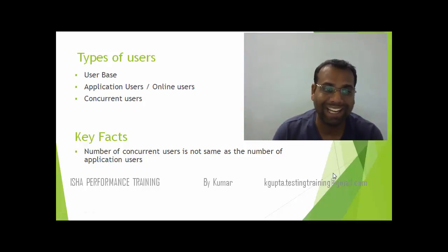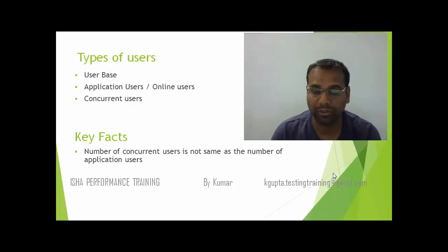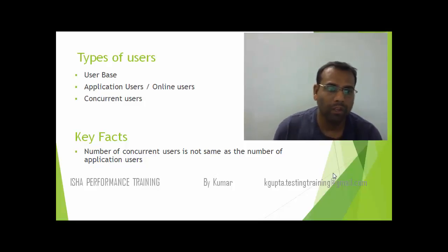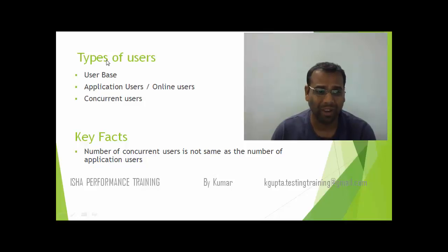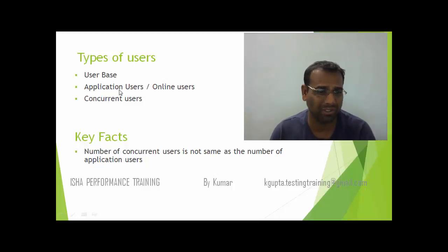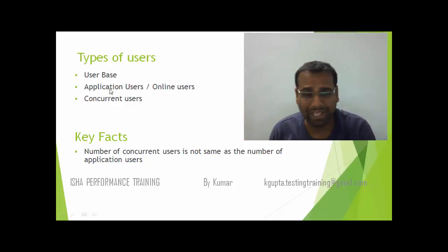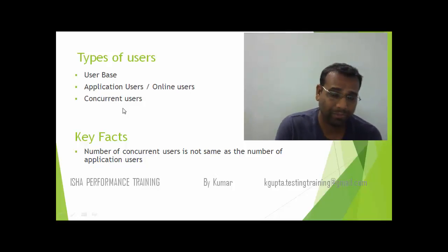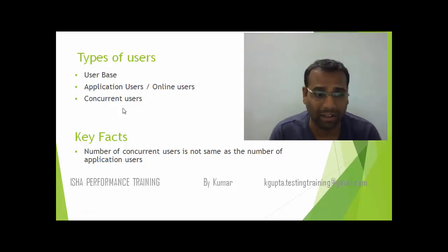My earlier video ended with something called concurrent users, so I thought this is the right time to understand different types of users when it comes to performance testing. As you can see on the slide here, broadly we can divide the whole number of users into three: one is user base, second is application users (some people call these online users), and the third one is concurrent users.